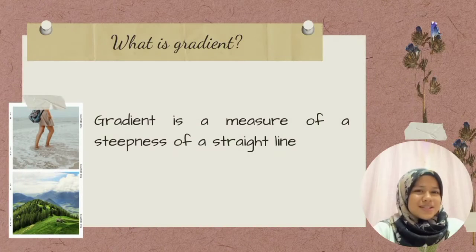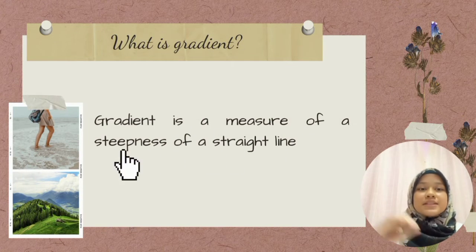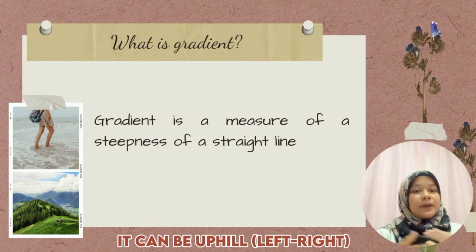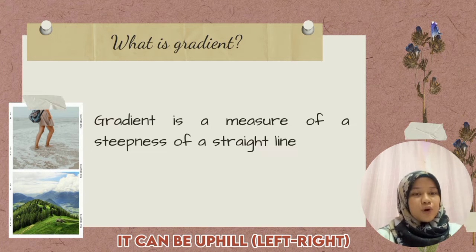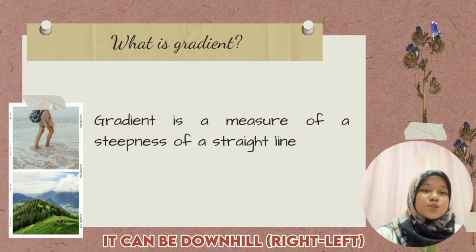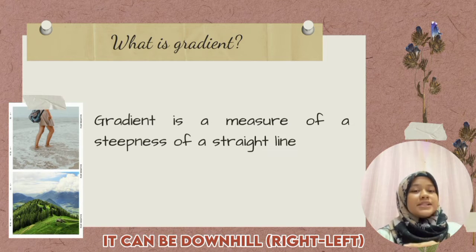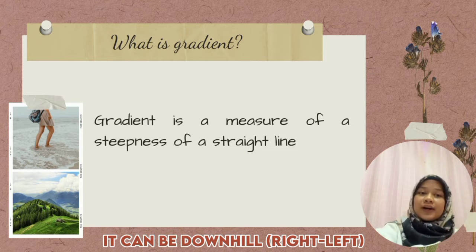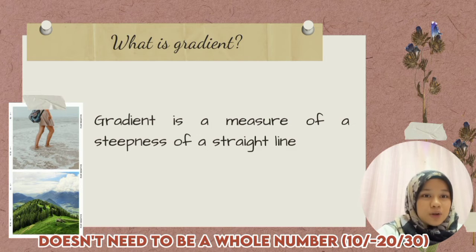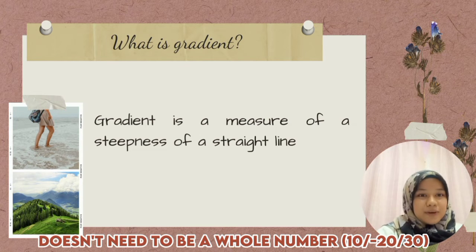First, what is gradient? Gradient is a measure of the stiffness of a straight line. A gradient can be uphill from direction left to right and also can be downhill from direction right to left. Gradient does not need to be a whole number — it can also be a positive or negative number.